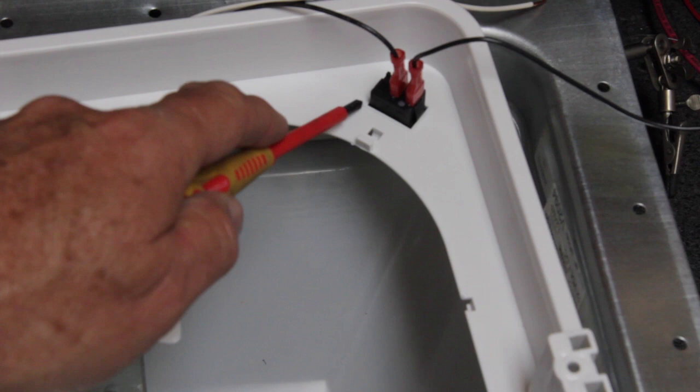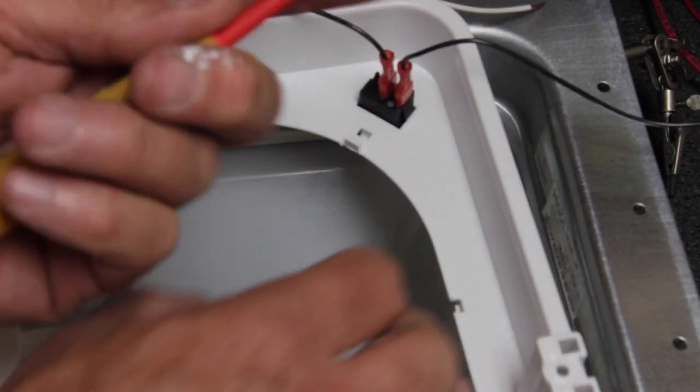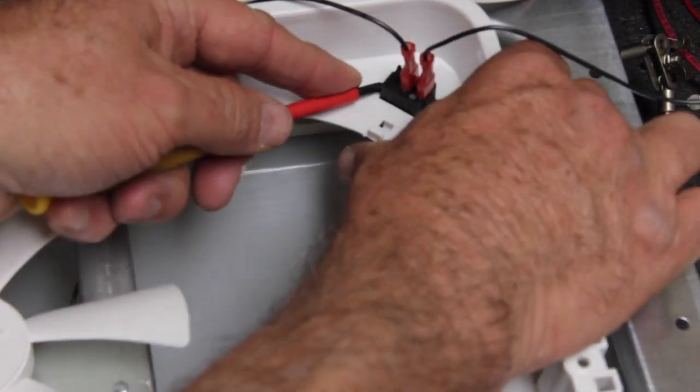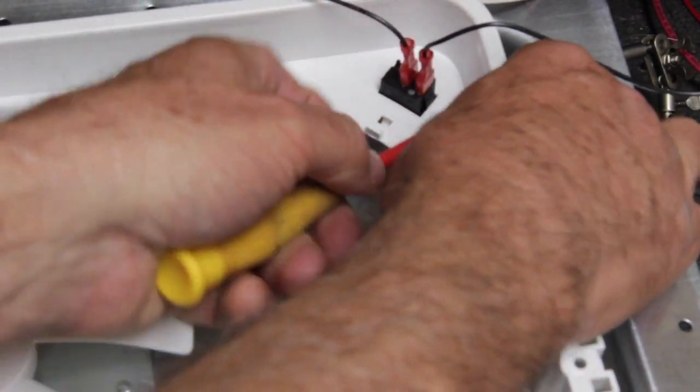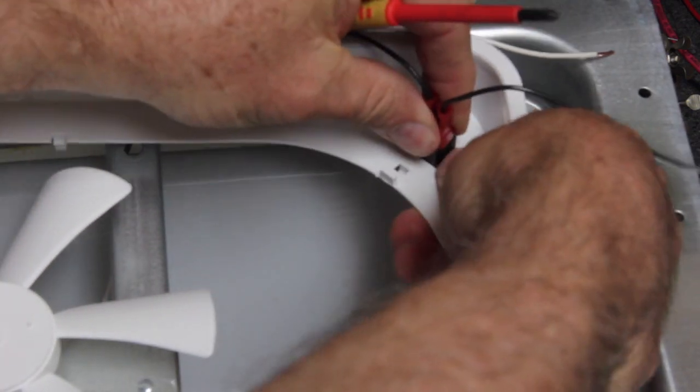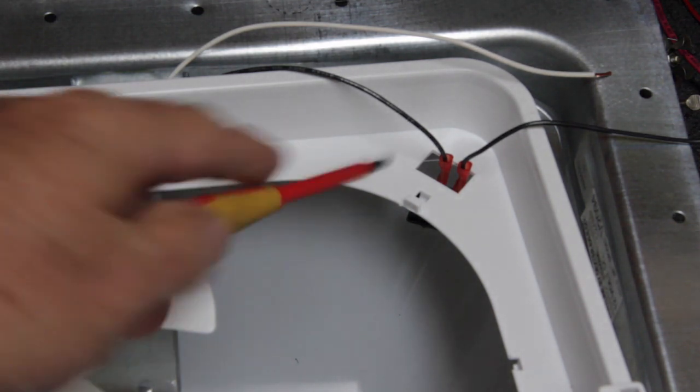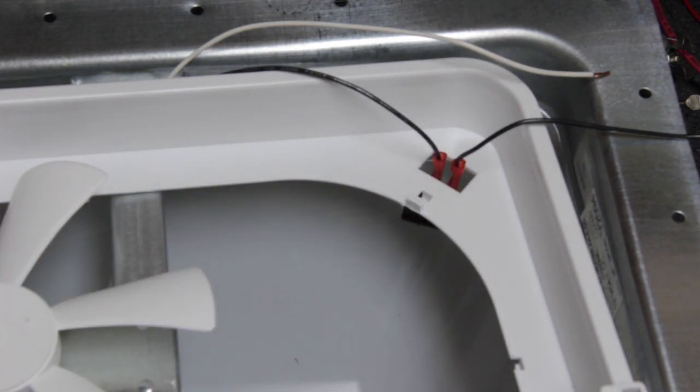On each side of the switch there's little tabs. What we want to do is take a screwdriver and gently push in on the tabs, and that way we can remove the switch from the housing.